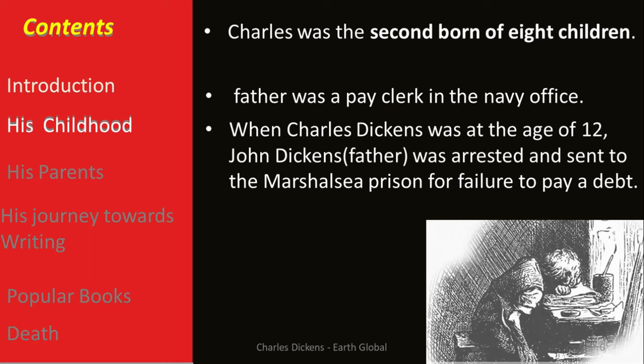Their father was a paid clerk in the Navy office. When Charles was at the age of 12, his father John Dickens was arrested and was sent to the Marshalsea prison for failing to pay a debt.